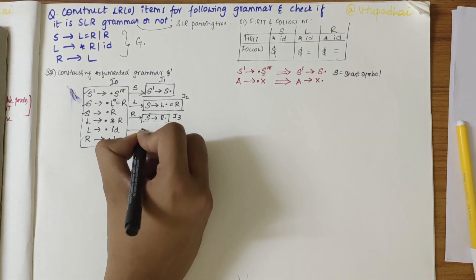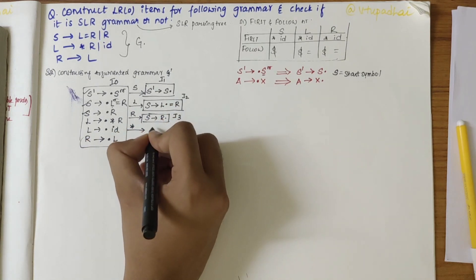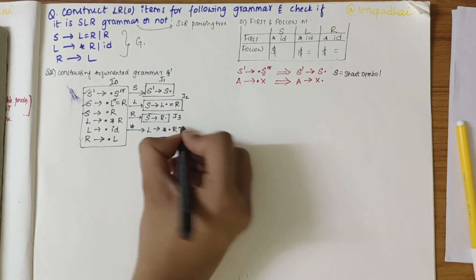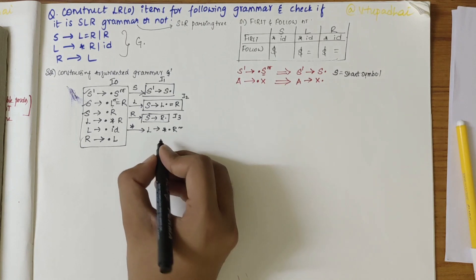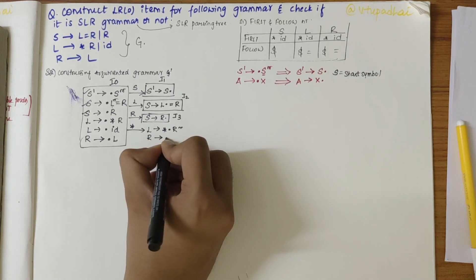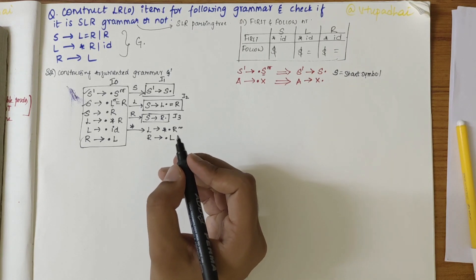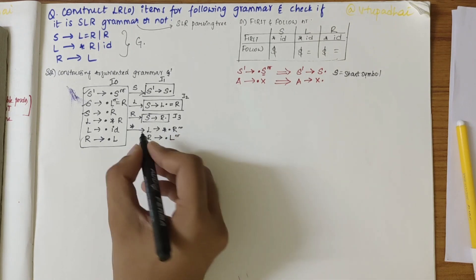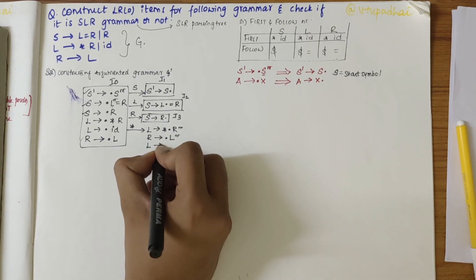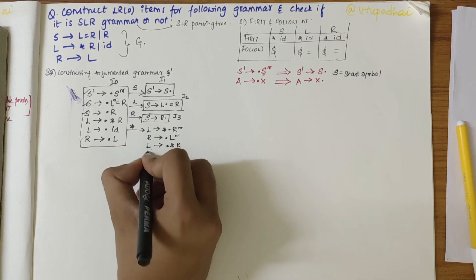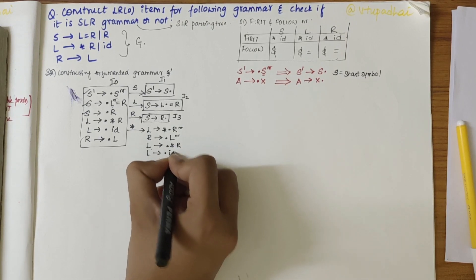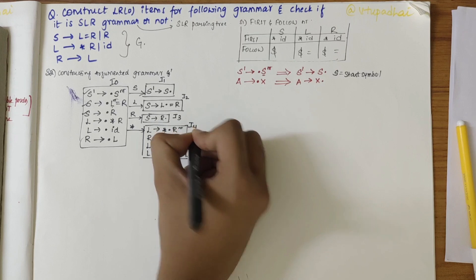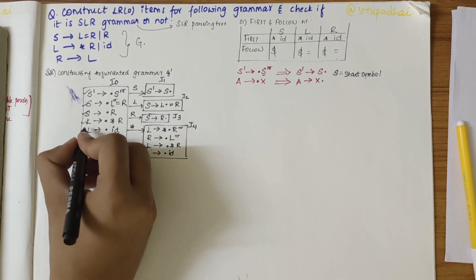Over star, I can write L derives star dot R. R being a non-terminal, I should write all possible productions of R: R derives dot L. L being a non-terminal, I also write L derives dot star R and L derives dot ID. I put this in a box — these are the I4 productions. Next, over ID, L derives id dot is item I5. Over L from I4, I get R derives L dot, which matches I2.